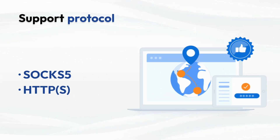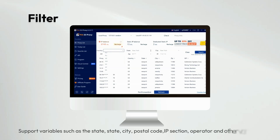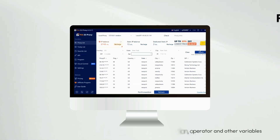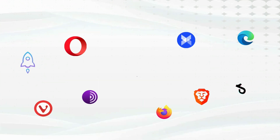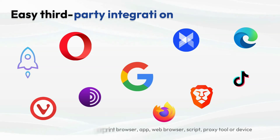Currently supports SOCKS5 and HTTPS protocols, with support for variables such as state, city, postal code, IP section, operator, and other variables. Use PIA S5 Proxy on any fingerprint browser, app, web browser, script, proxy tool, or device.